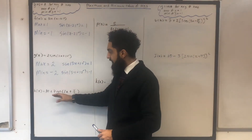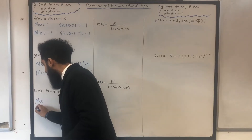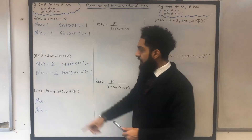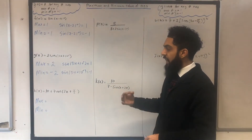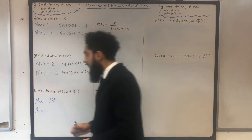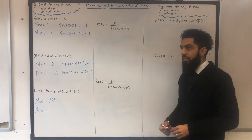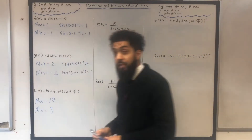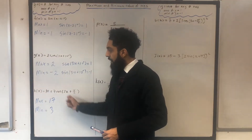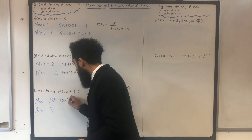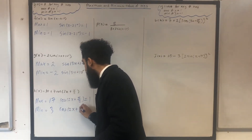The next function: h of x equal to 10 plus 7 cos in bracket 2x plus pi over 2. To maximize h of x, I need to maximize my cos, and the maximum of cos is 1. So I have 10 plus 7 times 1, which is 10 plus 7, which is 17. To minimize h of x, I need to minimize my cos, and the minimum of cos is minus 1. So 10 plus 7 times minus 1 is 10 minus 7, which is 3. In the exam, for the maximum (17) solve cos in bracket 2x plus pi over 2 equal to 1; for the minimum (3) solve cos in bracket 2x plus pi over 2 equal to minus 1.